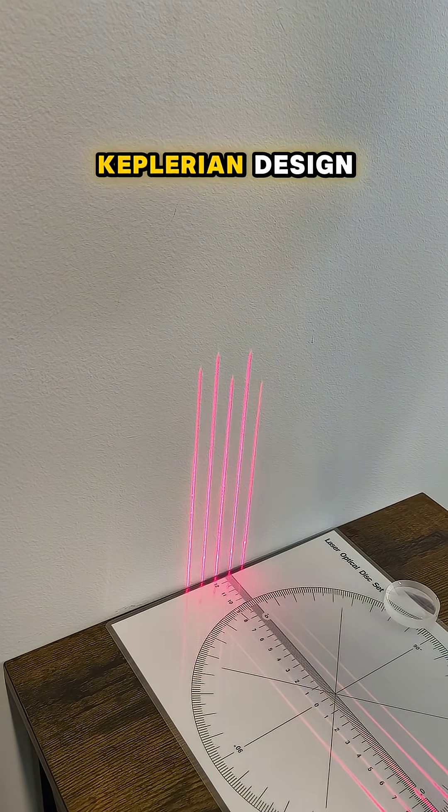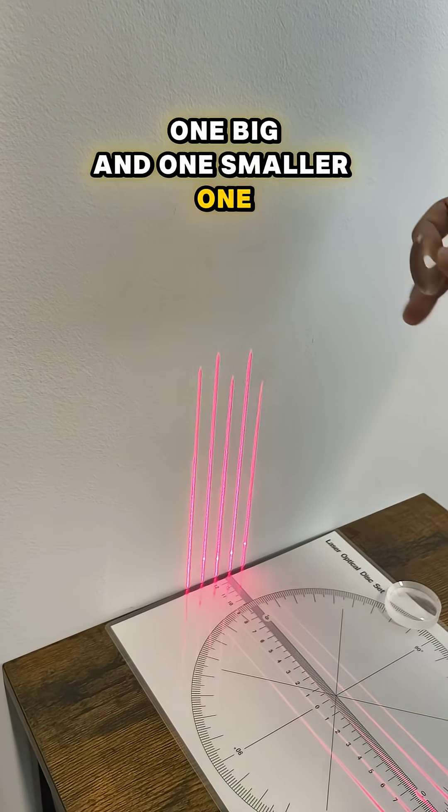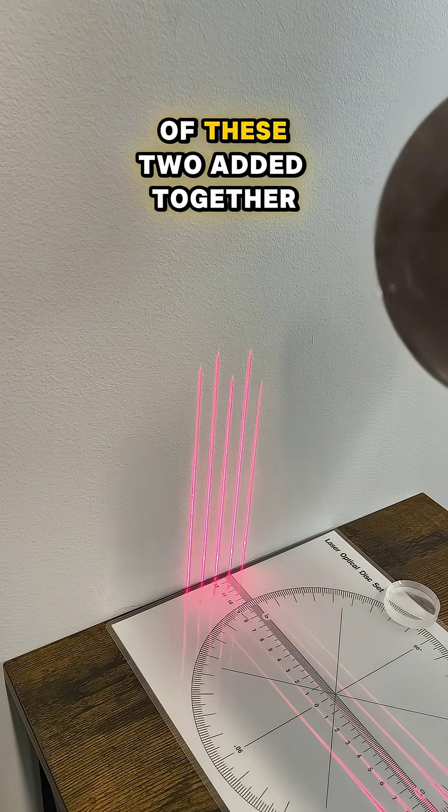Now we're going to try out the Keplerian design, which uses two convex lenses, one big and one smaller one. The distance between these two is going to be the focal length of these two added together.